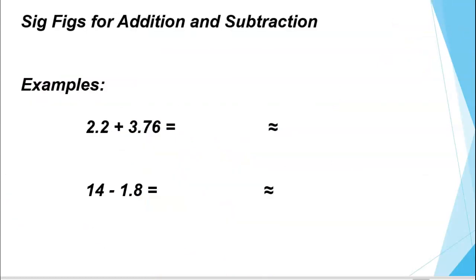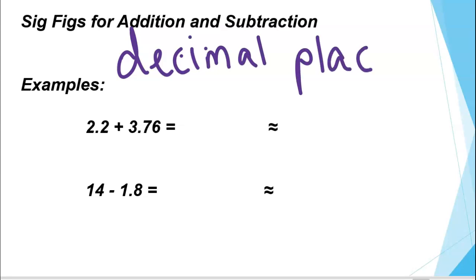Moving right along, we don't just want to look at individual numbers — we want to be able to do math with numbers and still have correct significant figures at the end of our math problem. We have some rules for adding and subtracting significant figures and also for multiplying and dividing. For addition and subtraction, it really has nothing to do with significant figures. Instead, we are looking at the number of decimal places. Your answer should have the same number of decimal places as the value with the least number of decimal places.